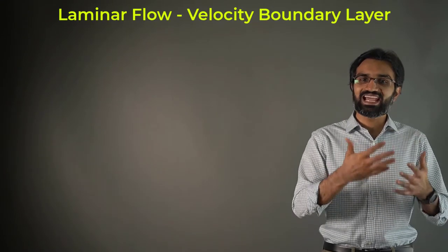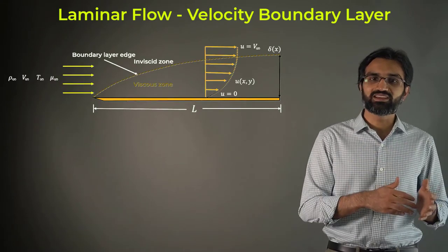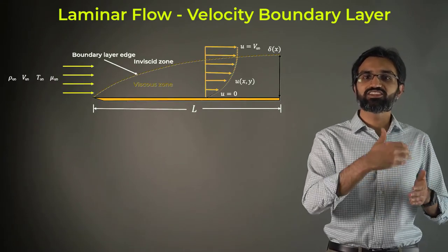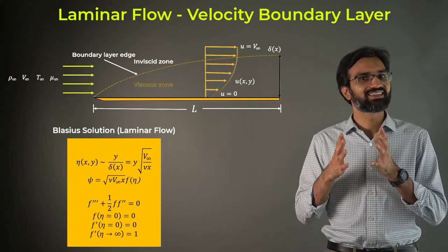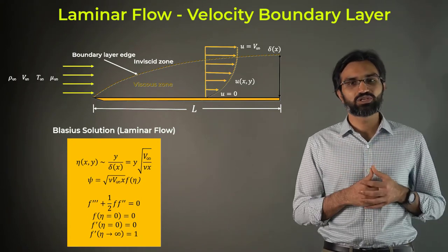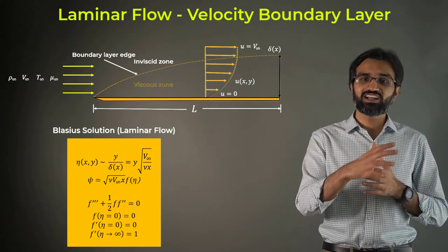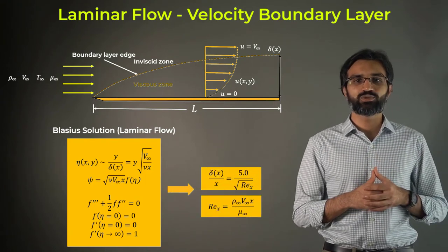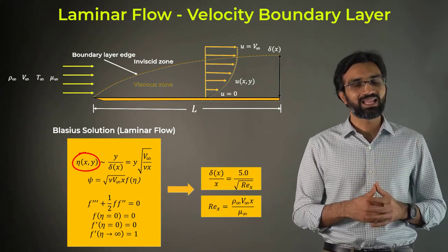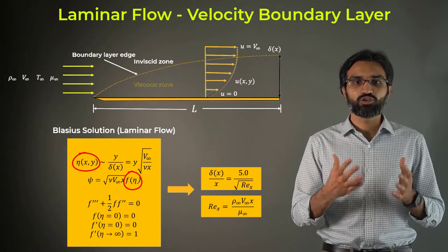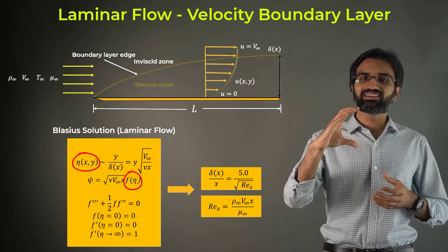For a laminar flow over a flat plate, the velocity boundary layer solution is obtained using a similarity analysis, popularly known as the Blasius solution. The governing equations are transformed into ordinary differential equations using similarity variables η and f(η), so we can obtain a relationship for the boundary layer thickness.